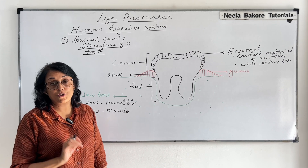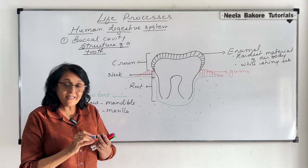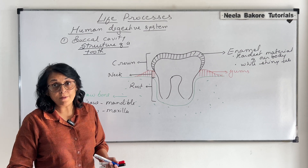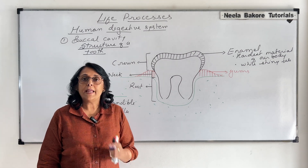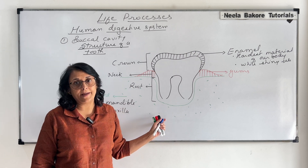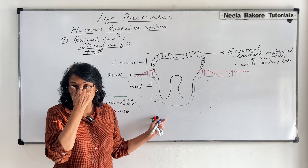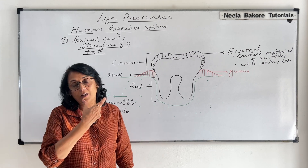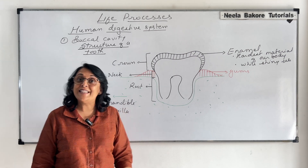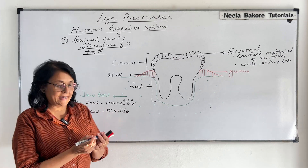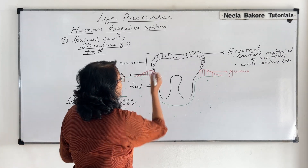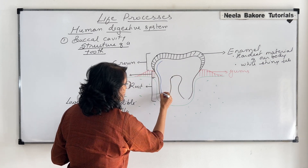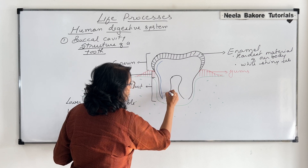Enamel has salts of calcium. Underneath this there is the substance which is called dentine. As I told you earlier, everything which is tooth-related has 'dent' in it — the doctors are known as dentists, and the complete teeth set of 32 is known as dentures. Dentine is inner to enamel and it forms the major part of our tooth.